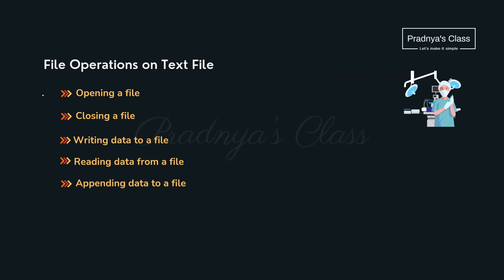Whenever we talk about a file, here are the basic operations we will be performing on it. The first two operations — opening the file and closing the file — are must. Apart from that, we can write data to the file, read data, as well as append data to the file. From an exam point of view, we will be concentrating more on reading data from the file, because generally you get a three-marks question on text file where you need to read the file.